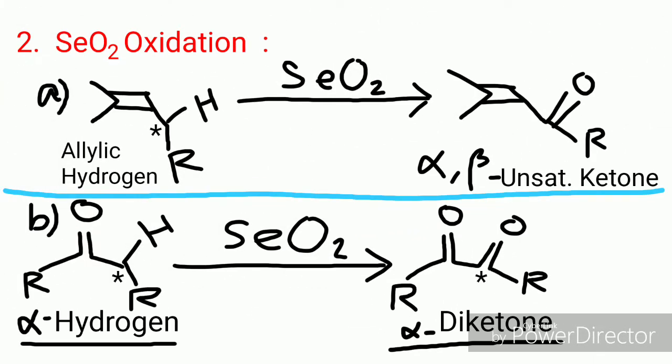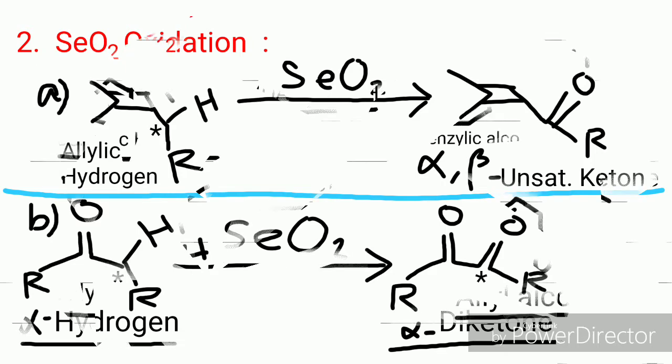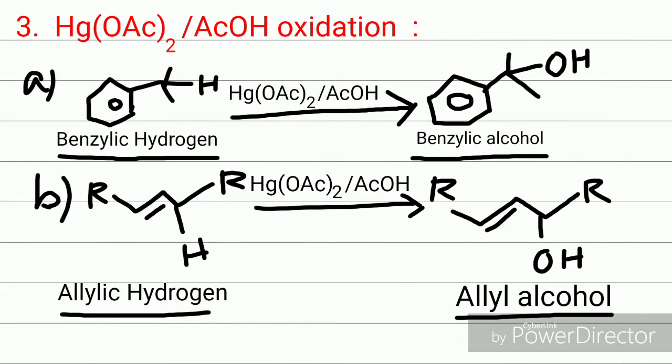The second is selenium dioxide oxidation. Here, allylic or benzylic CH₂ is converted to a keto group. Also, the alpha-CH₂ group of a carbonyl carbon or carbonyl system is converted to a keto group, forming a diketone.